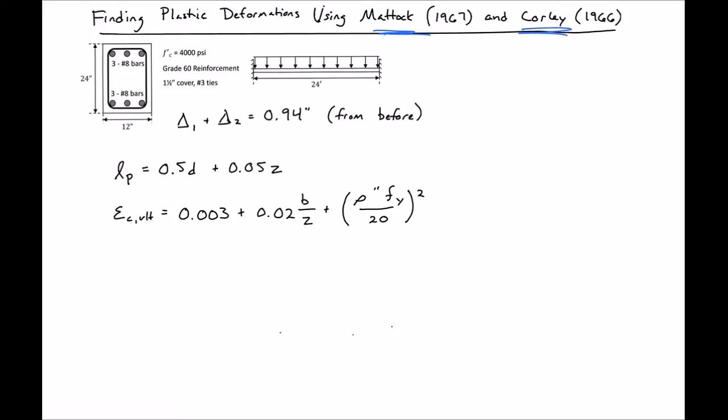When using an alternate approach for plastic deformations, our elastic and mechanism deflections are going to be the same. This 0.94 inches is the same as we found before for our fixed-fixed beam. Deflection one was our deflection until we form our hinges at the end, and then deflection two was the additional deflection to form a hinge at the middle. You can view the previous video to see how we did that.